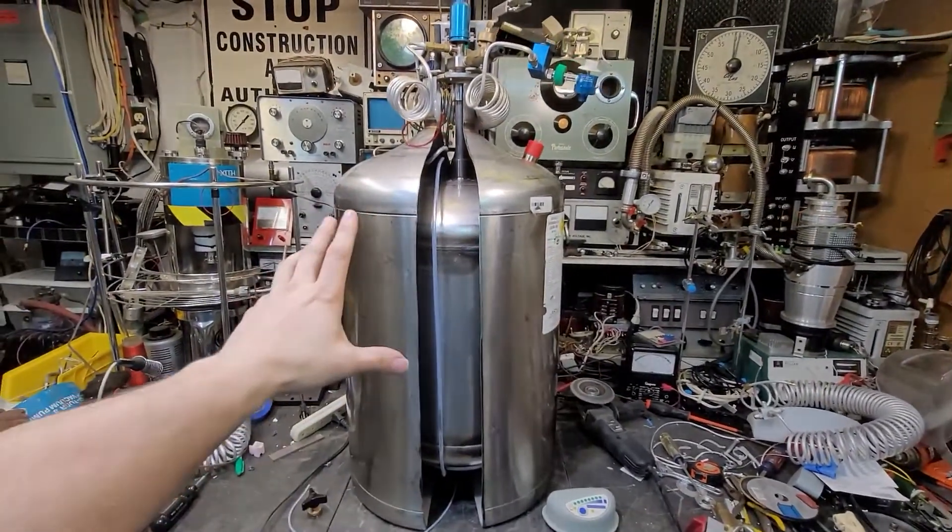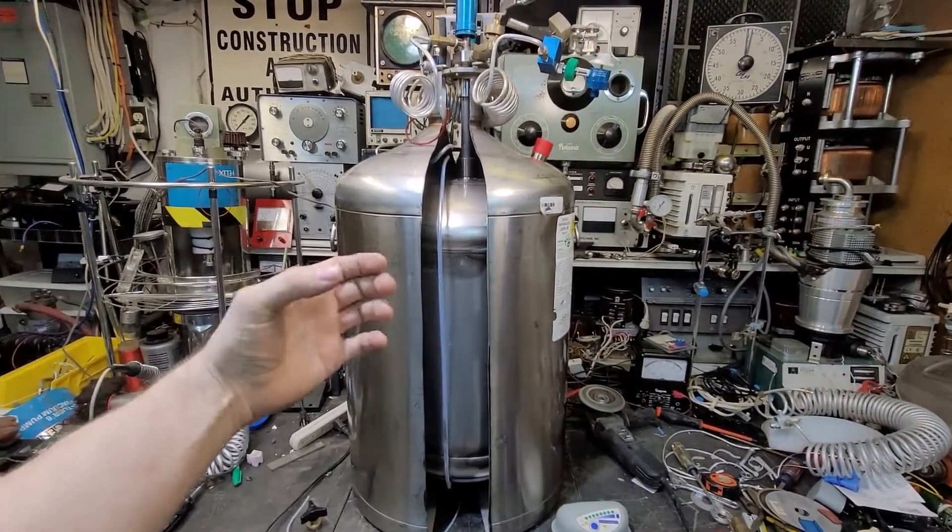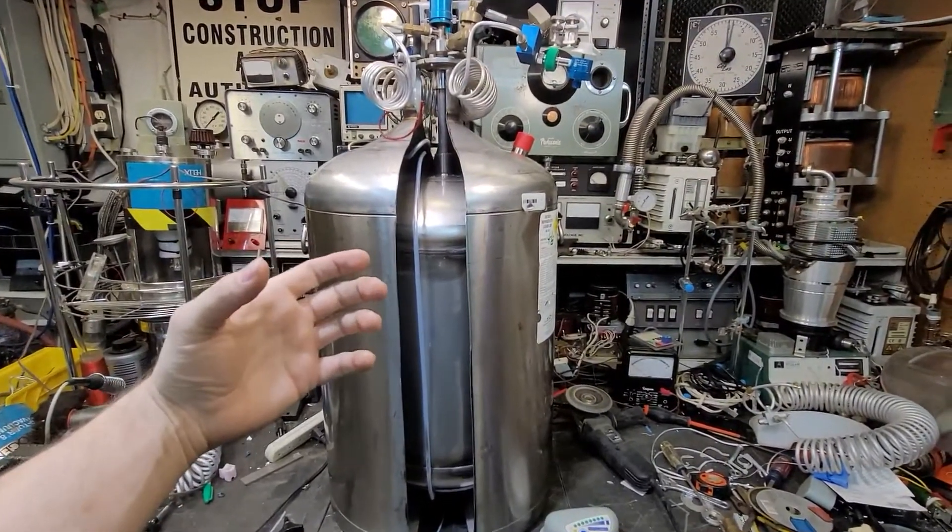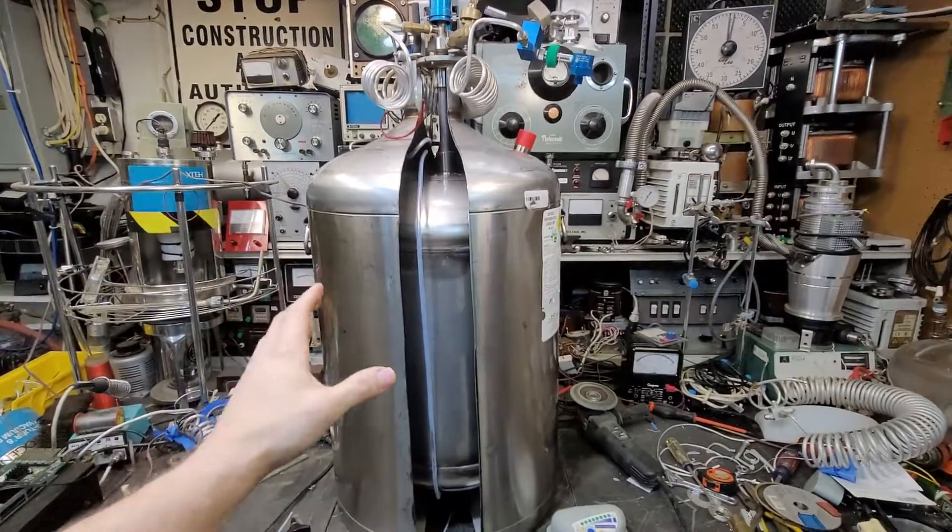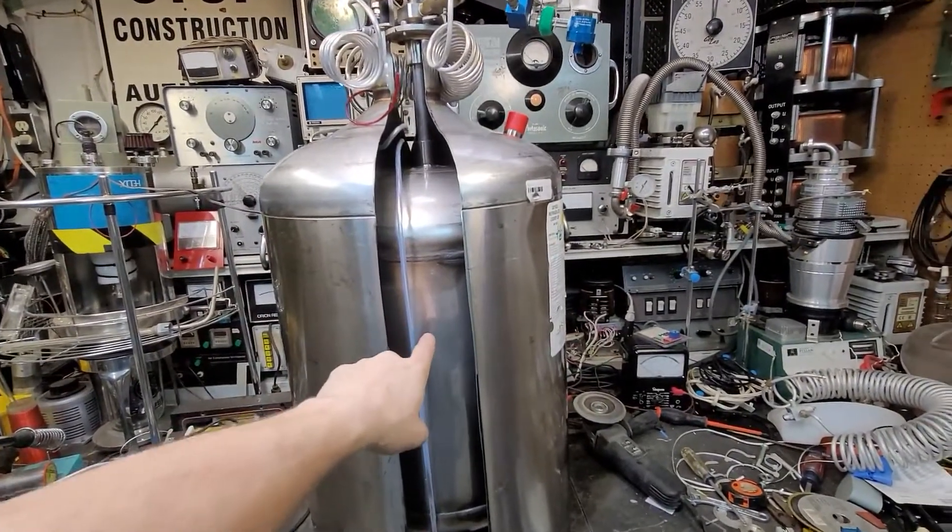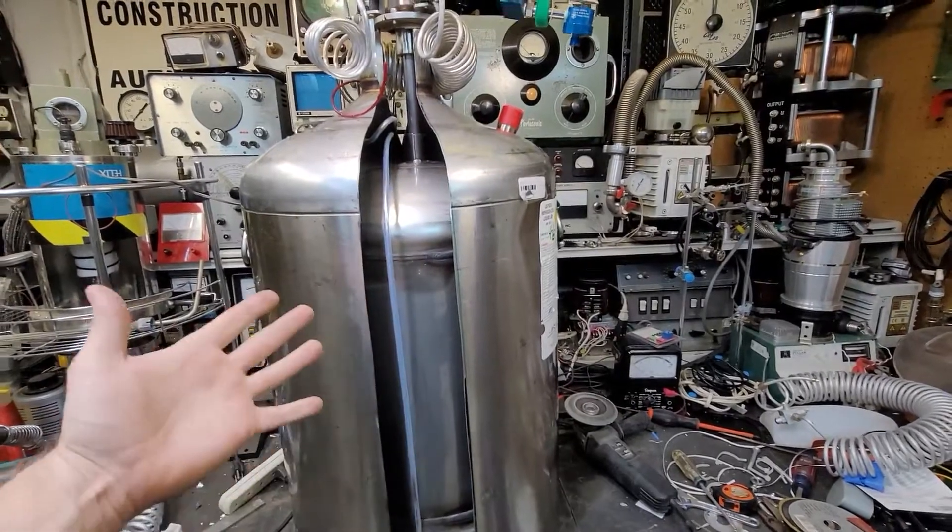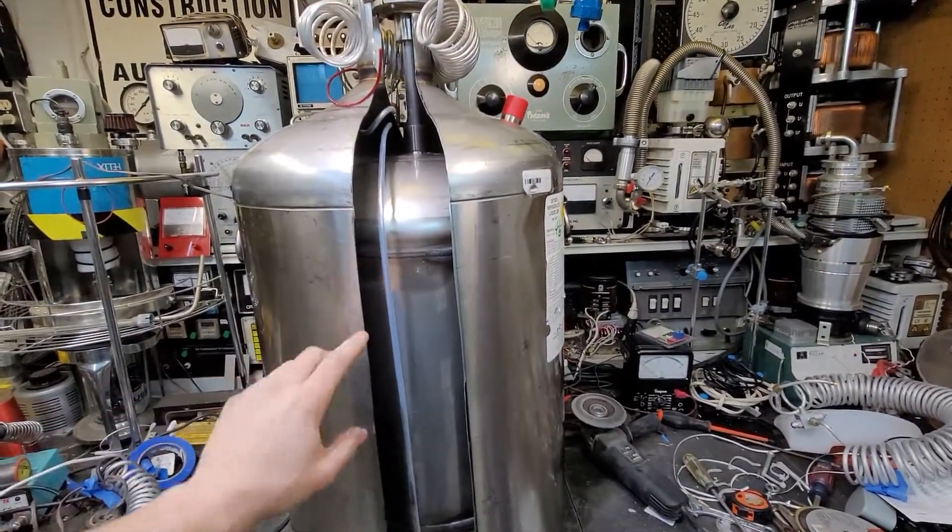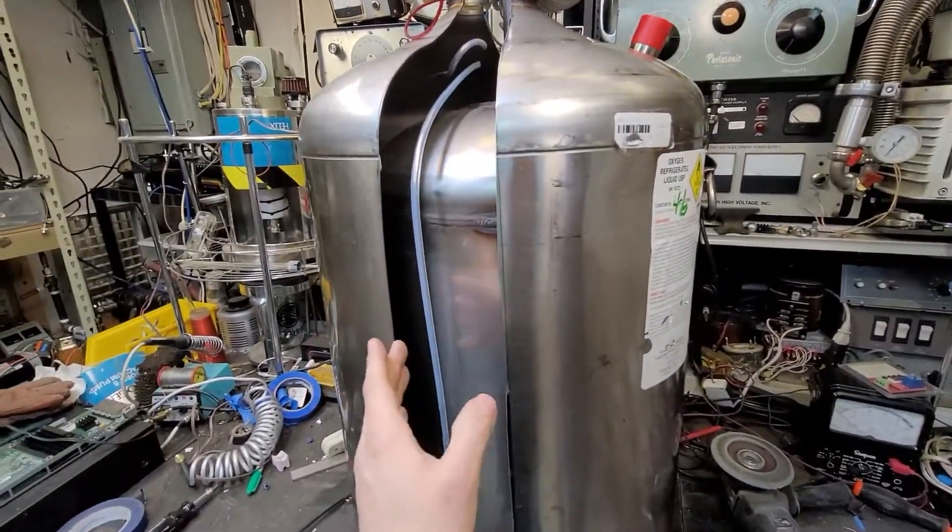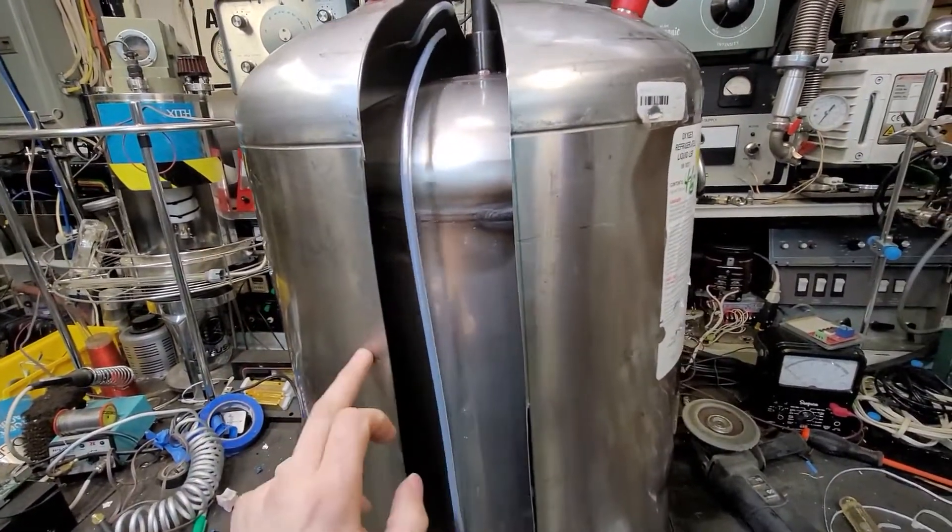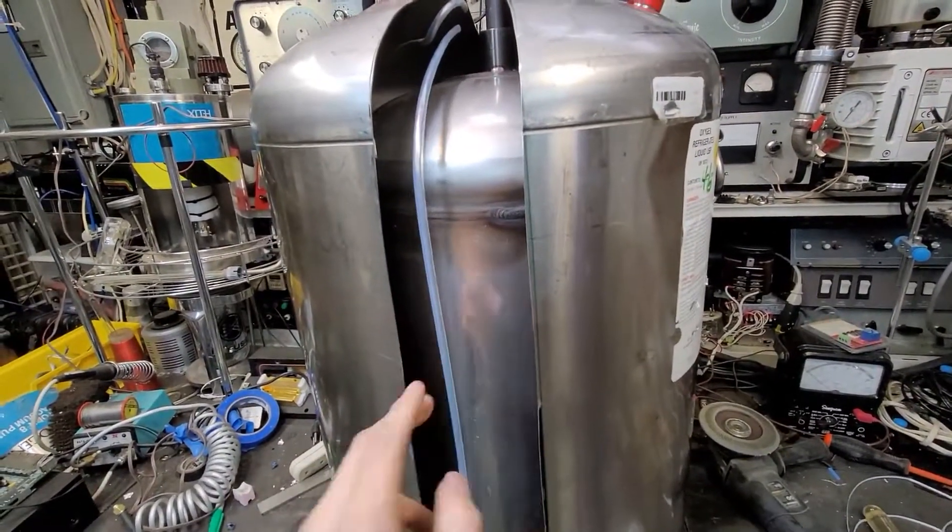So a Dewar is a fancy word for a thermos. Those Yeti cups that you keep your coffee hot in and your cold drinks cold in throughout the day, what those are is there's two tanks. There's the inner vessel where your fluid or your drink goes and then the outer wall. Between the two is nothing, literally. It's a vacuum.